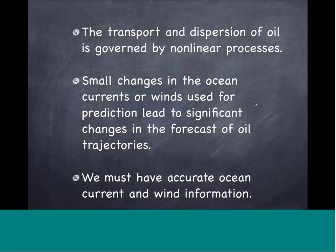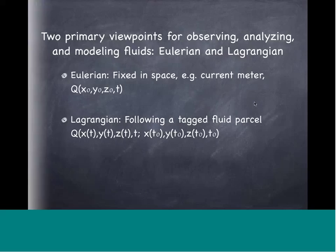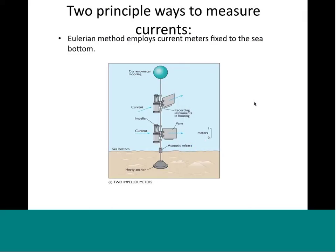The transport and dispersion of oil is governed by nonlinear processes. Small changes in the ocean currents or wind used for prediction leads to significant changes in forecast oil trajectories, so we must have accurate ocean current and wind information. There are two viewpoints for observing, analyzing, and modeling fluids. One is the Eulerian viewpoint — fixed in space, like a current meter at a fixed location measuring velocity. Another is Lagrangian — following a tagged fluid parcel using dye or a drifter. The Eulerian viewpoint is named after Euler, a Swiss mathematician, and Lagrangian after Lagrange.